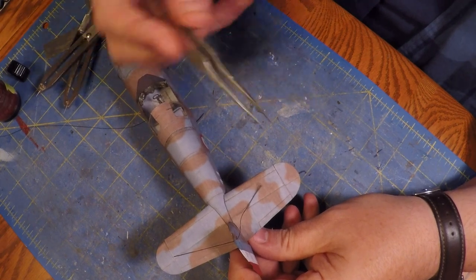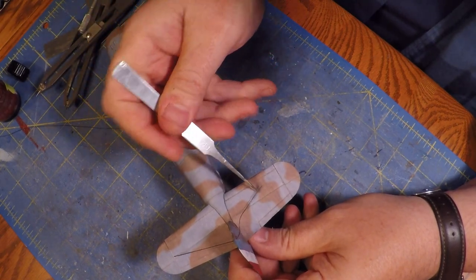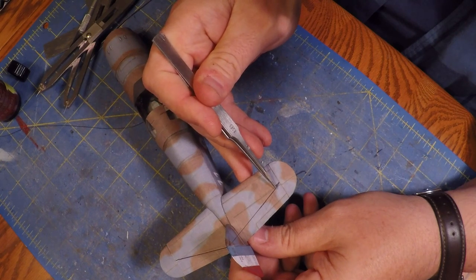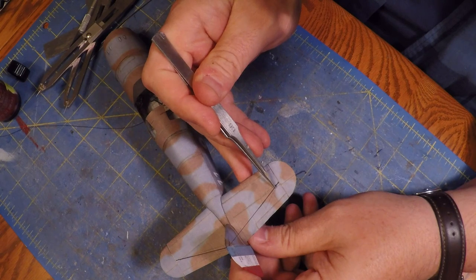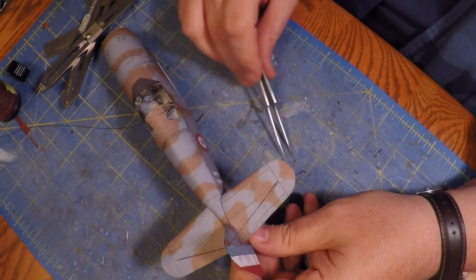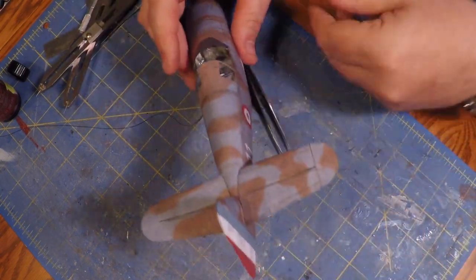You have to have steady hands to do this because you wiggle around, you'll mess it up. But there she is. The whole back again, except for the tail wheel is done.